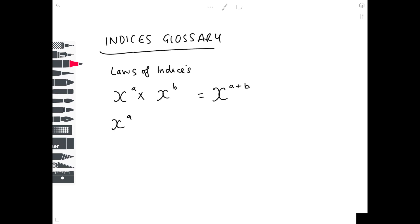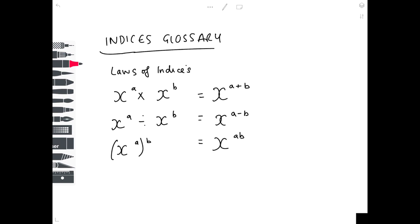Likewise, if you're dividing, you do the opposite and subtract: x to the a divided by x to the b gives x to the (a−b). The last law is x to the a, raised to the b — multiplying the powers — giving x to the (a×b). In other videos I'll show the full maths; this is just a glossary.